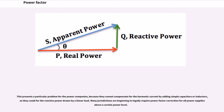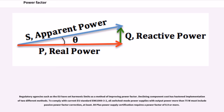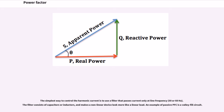This presents a particular problem for the power companies, because they cannot compensate for the harmonic current by adding simple capacitors or inductors, as they could for the reactive power drawn by a linear load. Many jurisdictions are beginning to legally require power factor correction for all power supplies above a certain power level. Regulatory agencies such as the EU have set harmonic limits as a method of improving power factor. To comply with current EU standard EN 61003-2, all switched-mode power supplies with output power more than 75W must include passive power factor correction at least. The simplest way to control the harmonic current is to use a filter that passes current only at line frequency, consisting of capacitors or inductors, making a non-linear device look more like a linear load.